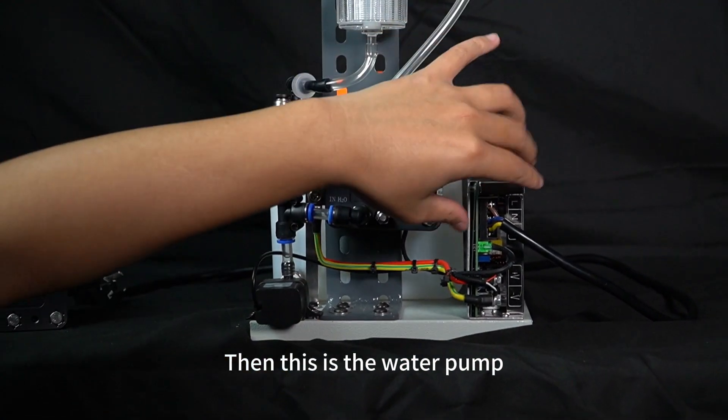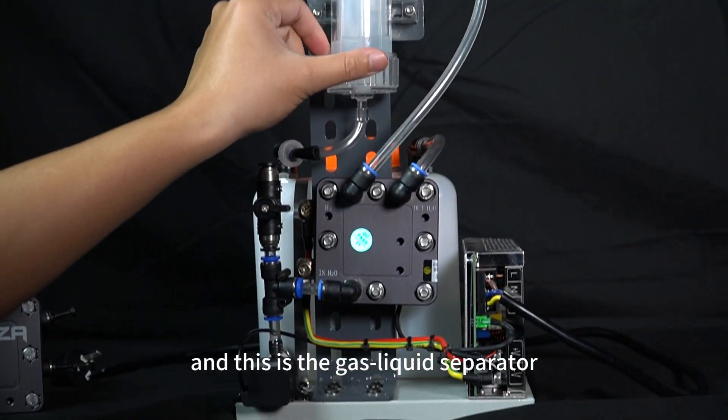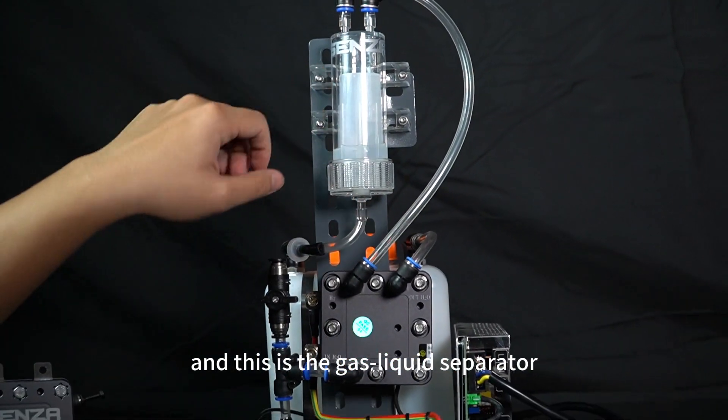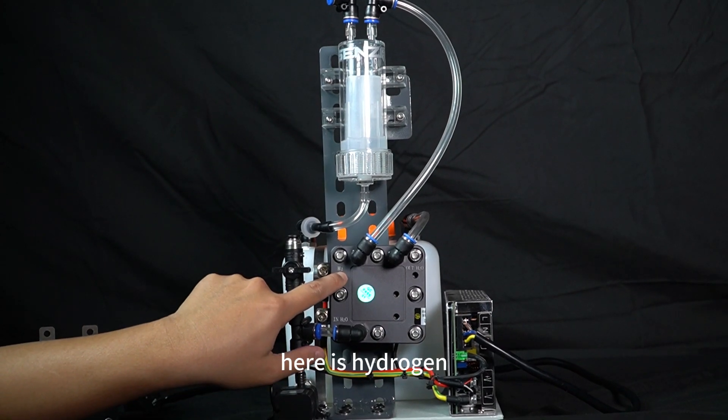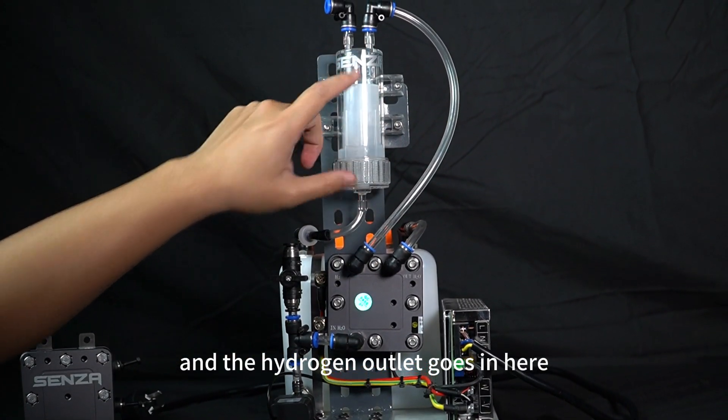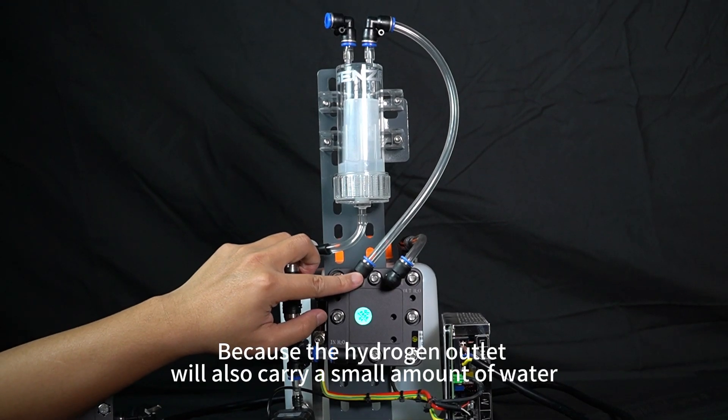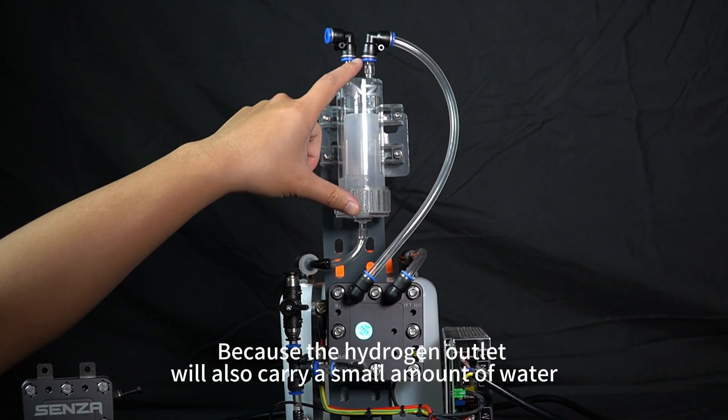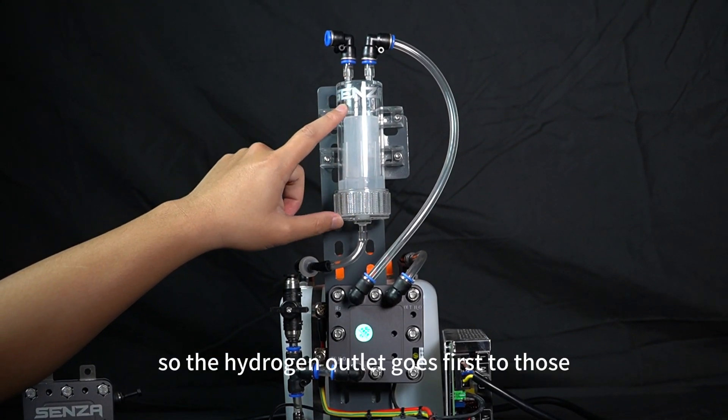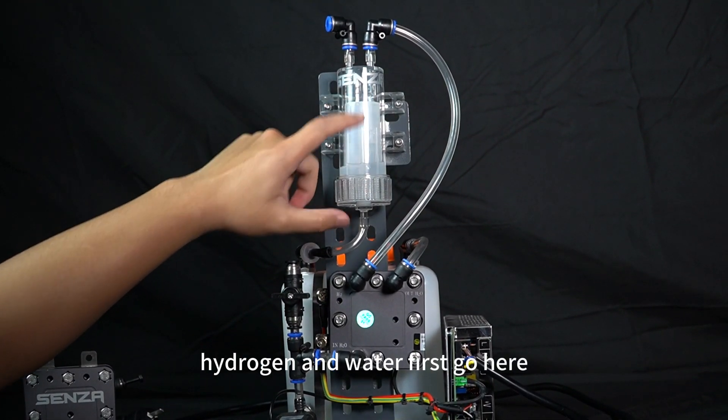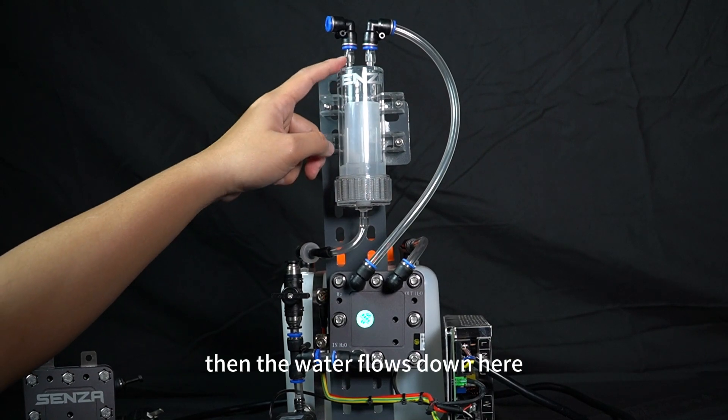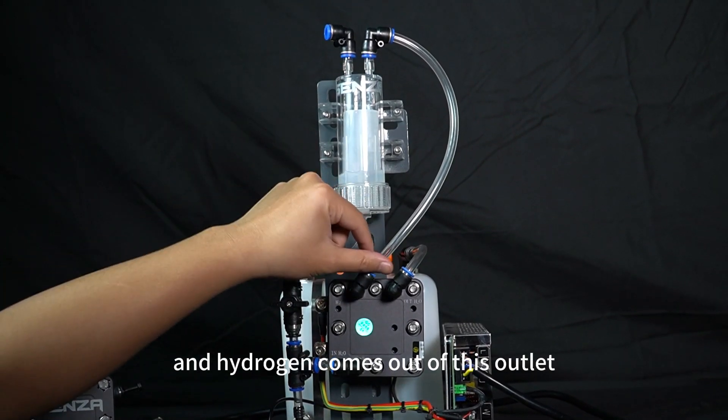Then this is the water pump, this is the transformer, and this is the gas liquid separator. From this hydrogen generator, we can clearly see hydrogen here. The hydrogen outlet goes in here because the hydrogen outlet will also carry a small amount of water. So the hydrogen outlet goes first to those. Hydrogen and water first go here, then the water flows down here, and hydrogen comes out of this outlet.